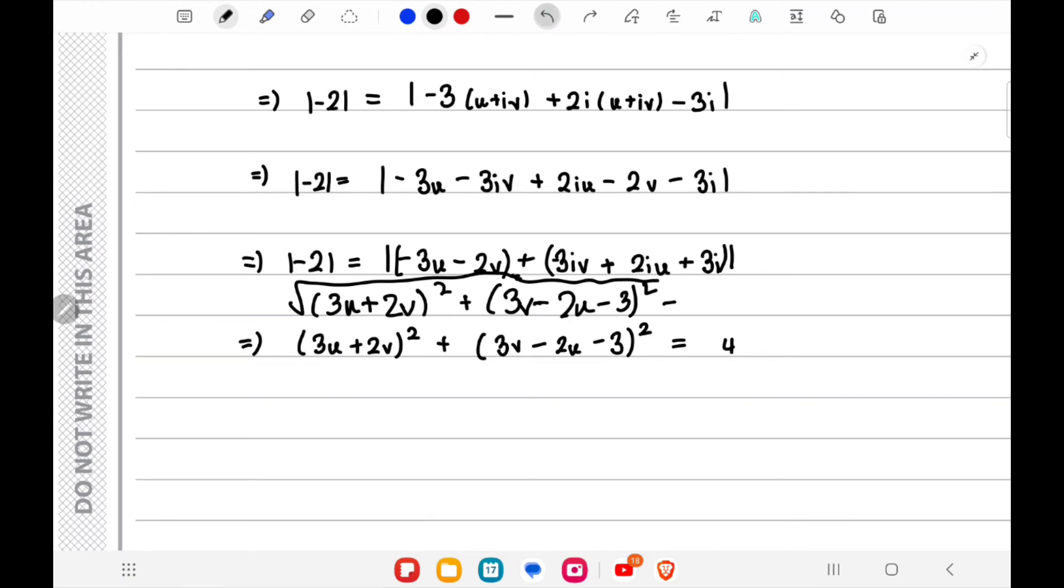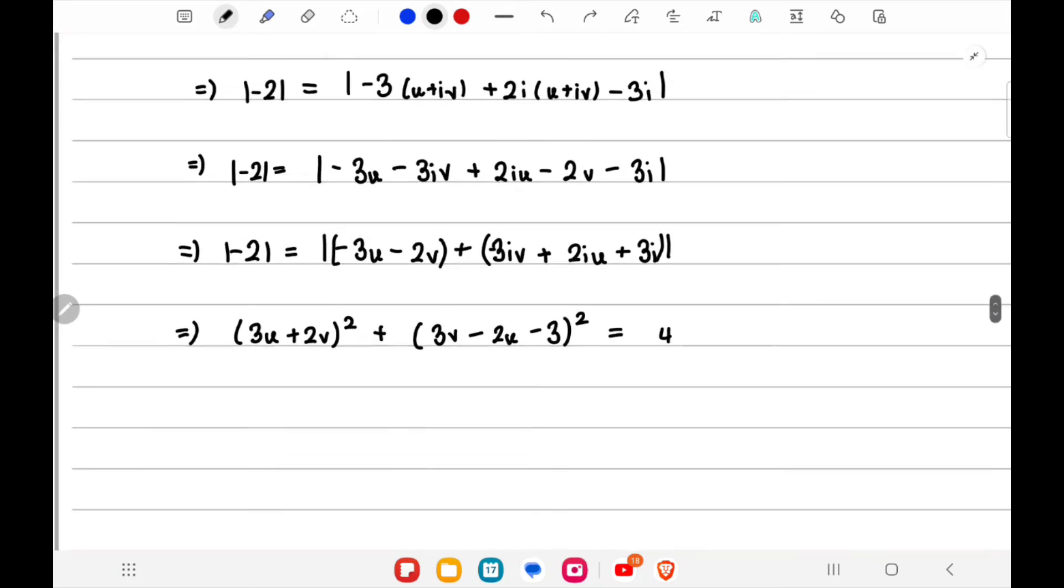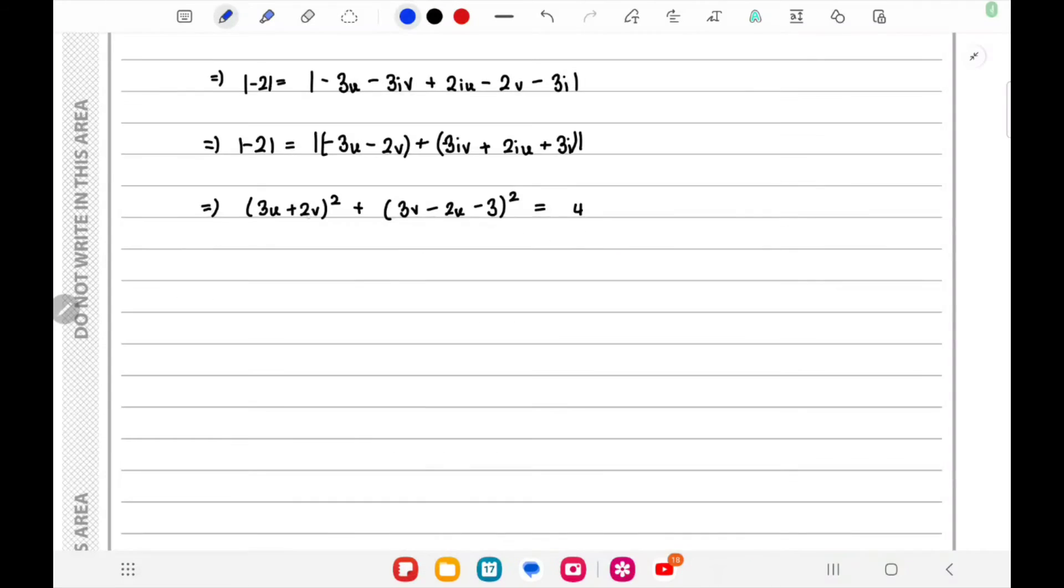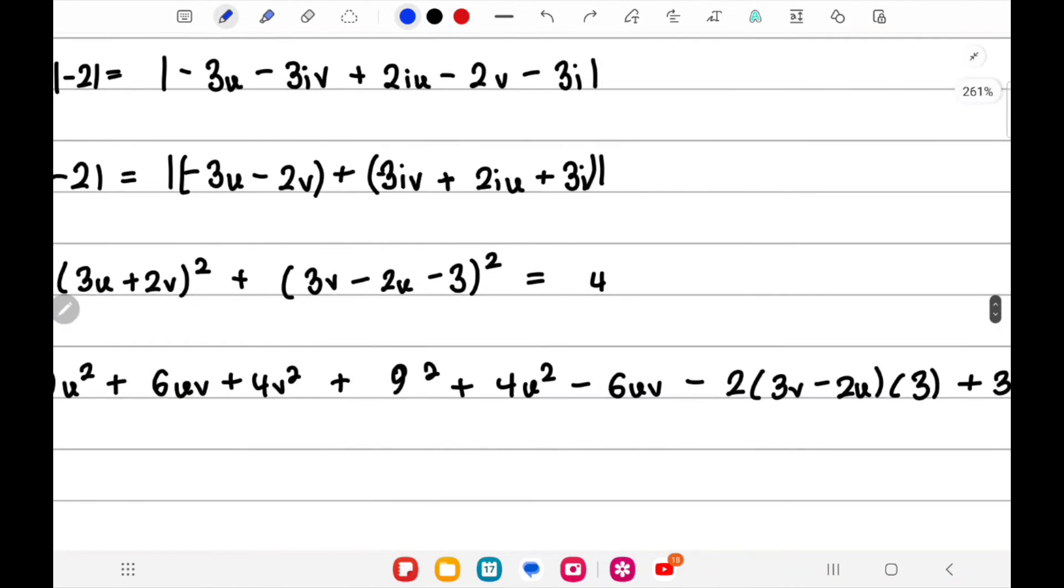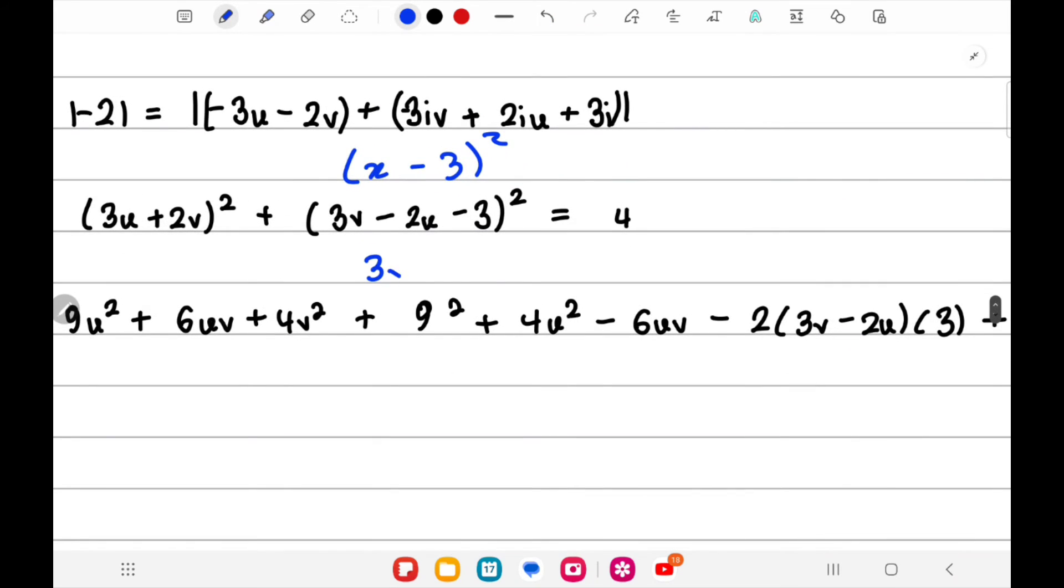We can square both sides and write it in the form below. Break the squares down—for the first part this would be straightforward. For the second one, consider this as (x - 3)² and consider (3v - 2u) as x.